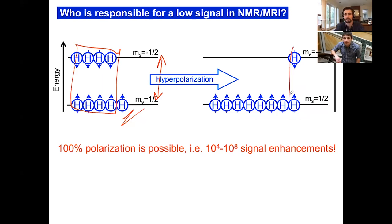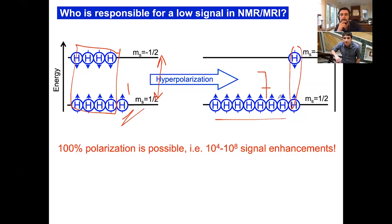With hyperpolarization, you can see that more spins are aligned — for example, seven times larger polarization in the hyperpolarized picture compared to thermal equilibrium, where most spins cancel each other's effect.